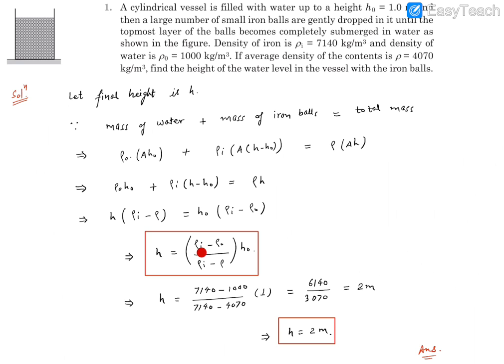So H turns out to be (ρᵢ minus ρ₀) divided by (ρᵢ minus ρ) times H0. We have ρᵢ for iron density, ρ₀ for water density, and ρ for average density. These values are known to us, so we can substitute.